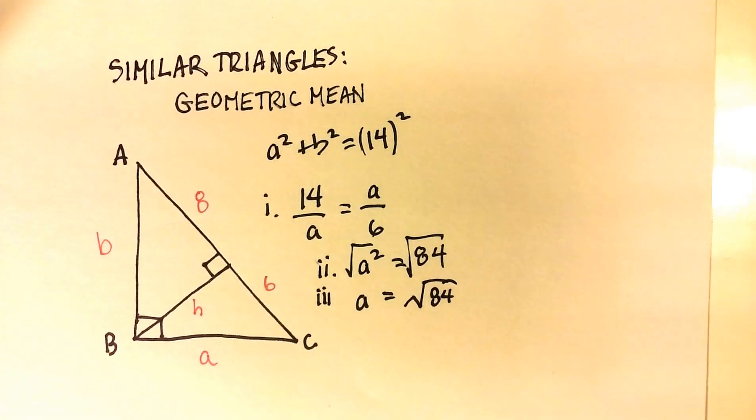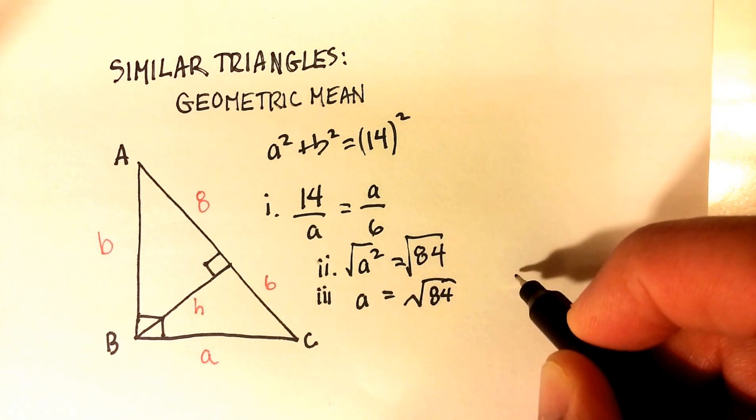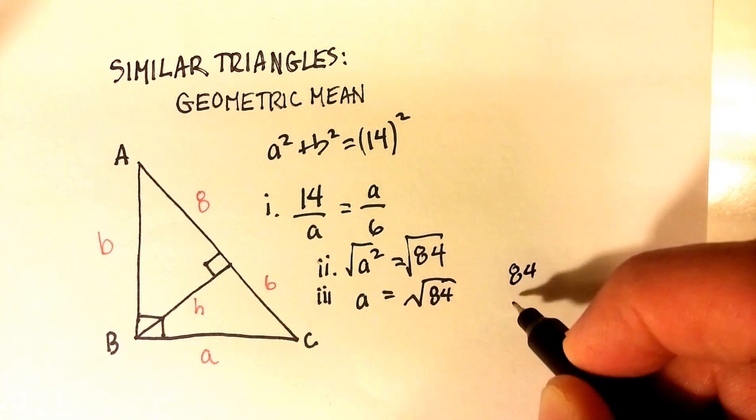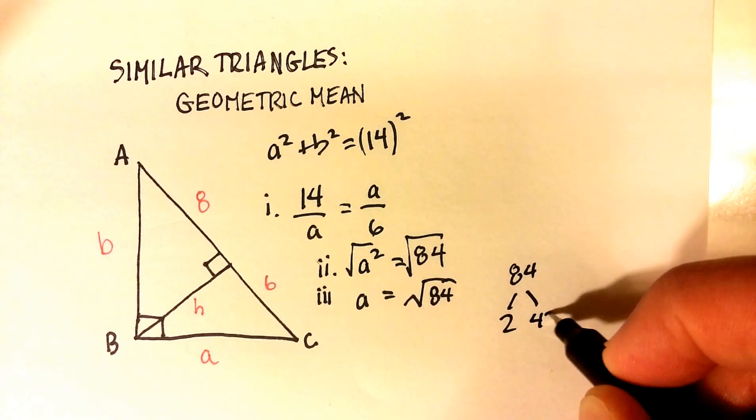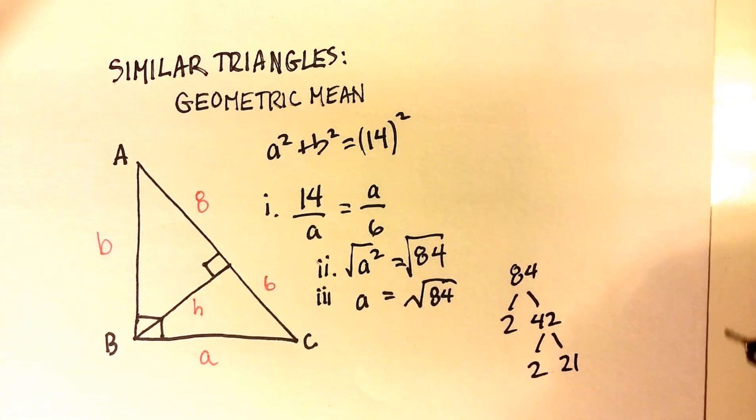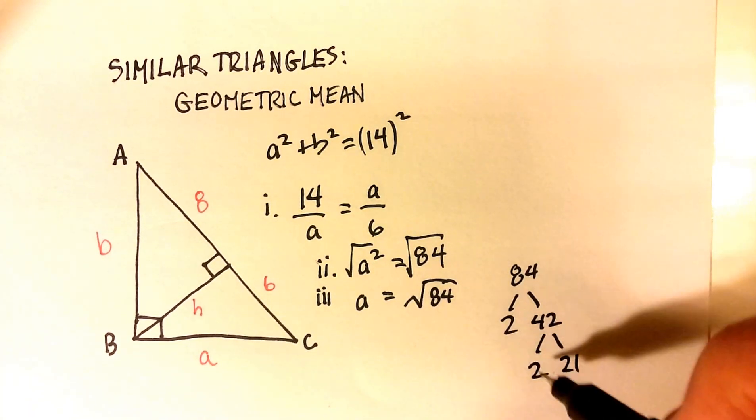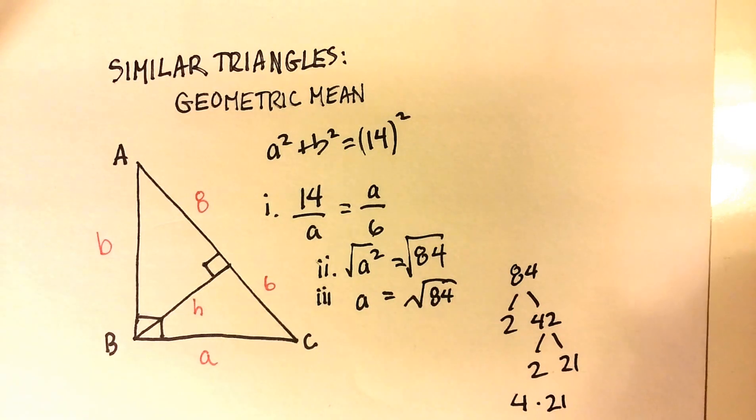So how do we figure out what the perfect squares are in 84? Well, you can do a number tree. And I know that that's 2 times 42. And that's just going to be 2 times 21. And there's a perfect square right there, 4 times 21.